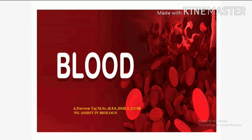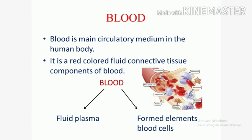First you should know what is blood. Blood is a body fluid in humans and other animals that delivers necessary substances such as nutrients and oxygen to the cells, and transports metabolic waste products away from those same cells. Blood is the main circulatory medium in the human body. It is a red colored fluid and a connective tissue. The components of blood are divided into two.